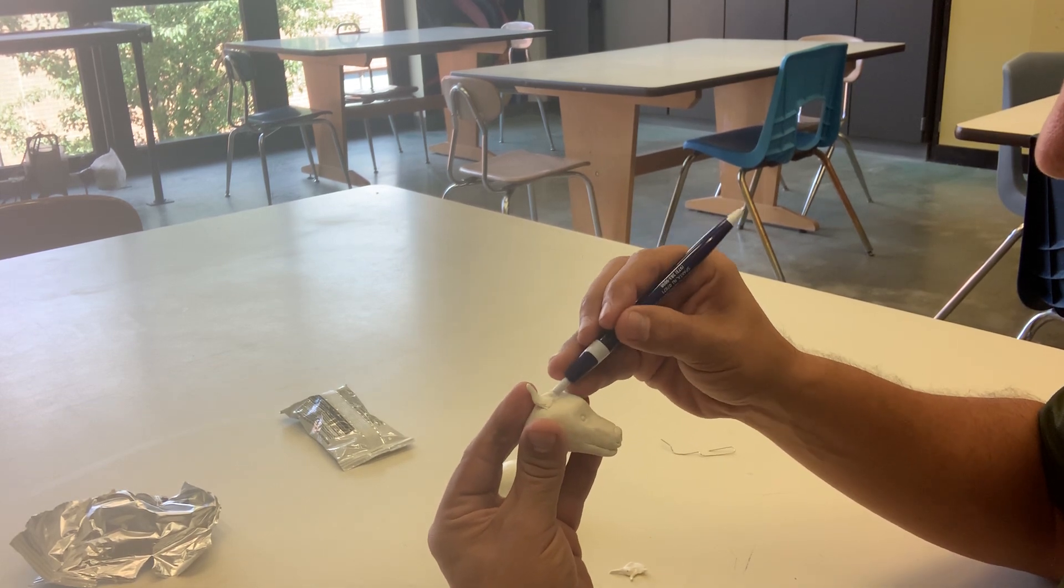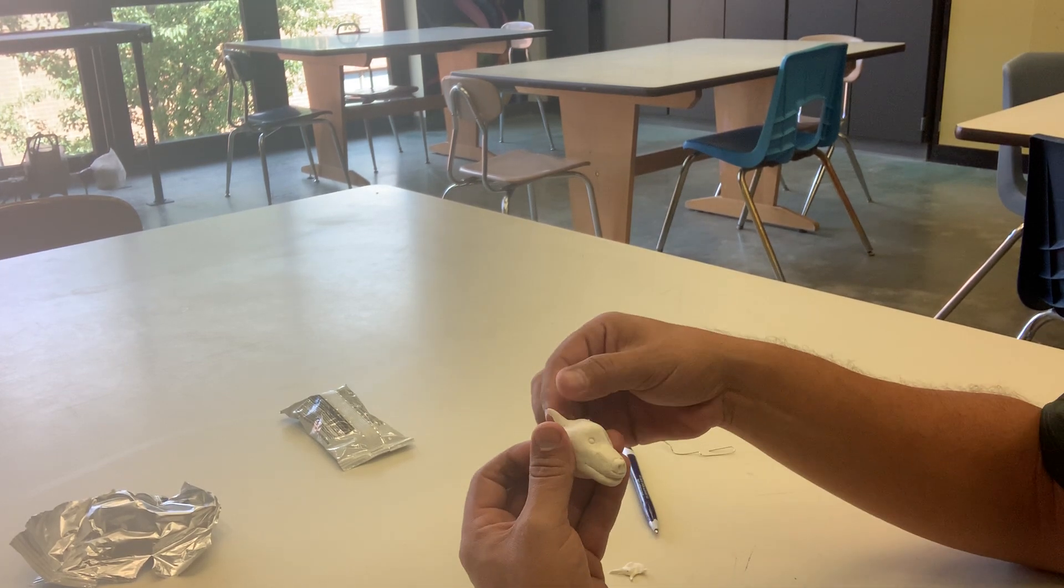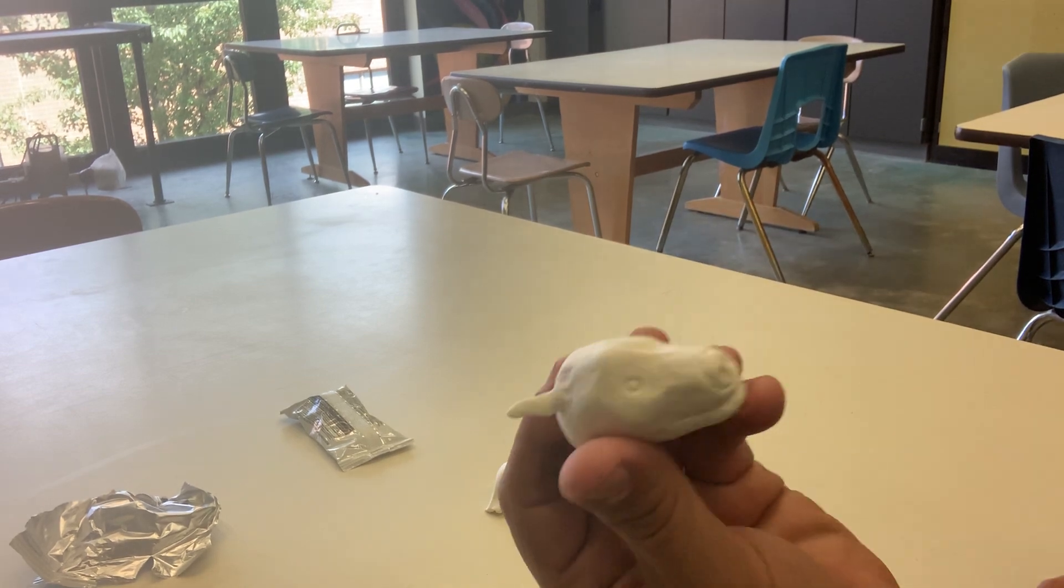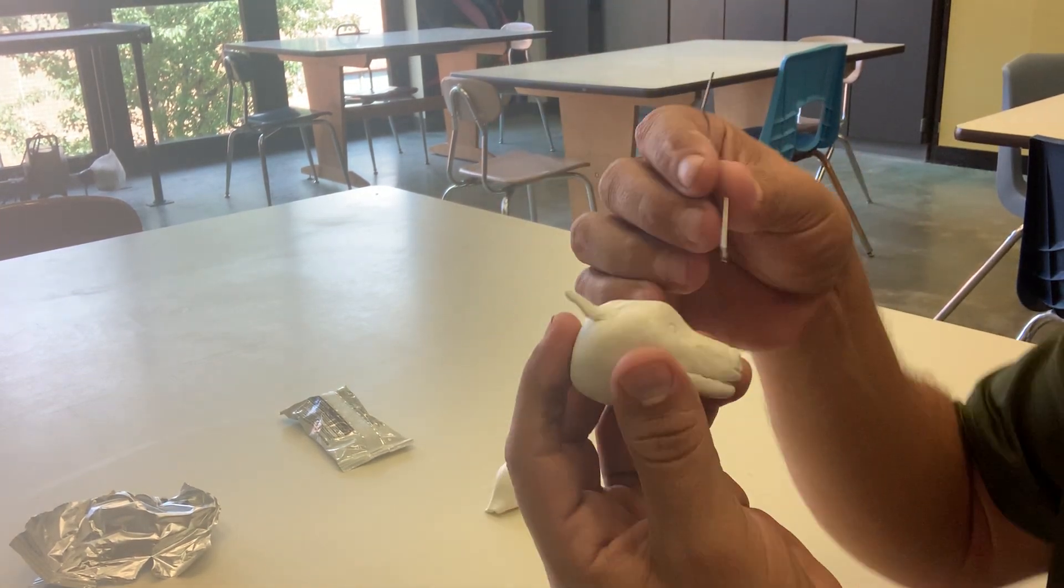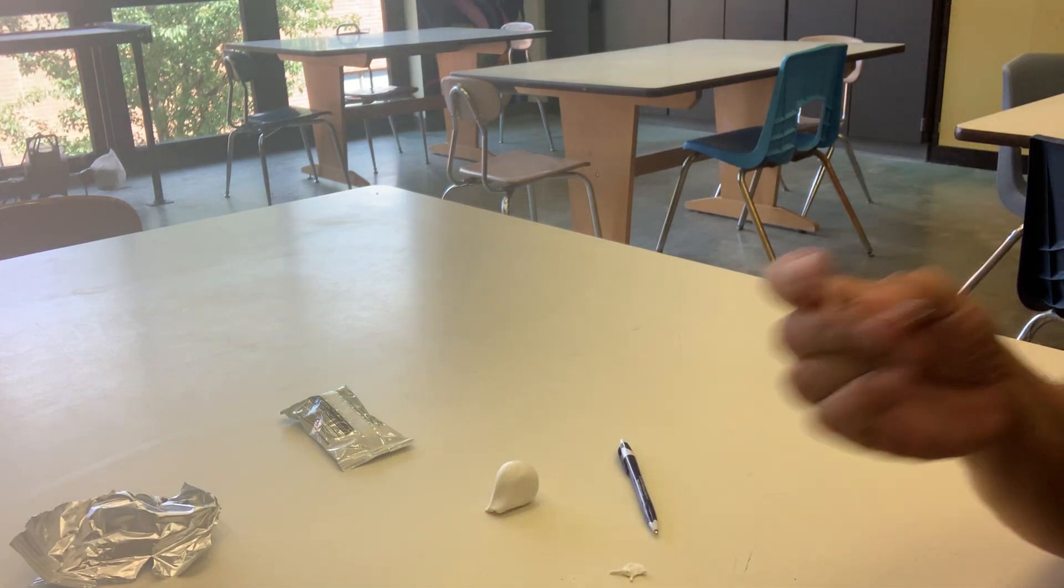And again, you use whatever tools you have around your house and get creative to put on the ear. Now part of this is going to be the little details. So if I want to add kind of like a scale texture, what I could do is I could bend one of these in.